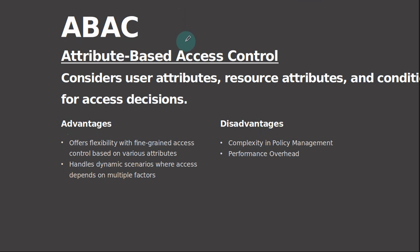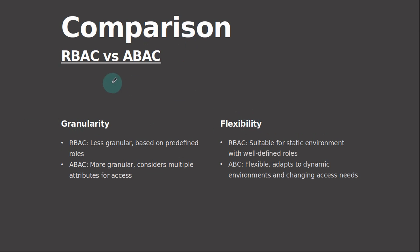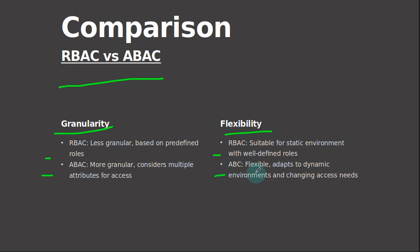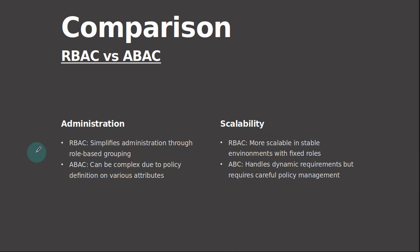So those are the key implications to keep in mind. The comparisons: we have granularity and flexibility. RBAC is less granular but based on predefined roles, while ABAC is more granular and considers multiple attributes for access. When it comes to flexibility, RBAC is suitable for static environments with well-defined roles, while ABAC is flexible and adapts to dynamic environments and changing access needs. For administration and scalability: RBAC simplifies administration through role-based grouping, while ABAC can be complex due to policy definition on various attributes. RBAC is more scalable in stable environments with fixed roles, and ABAC handles dynamic requirements but requires careful policy management.